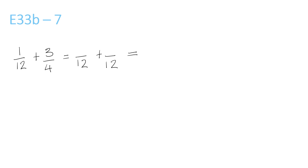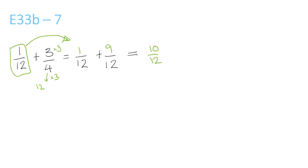12 and 4 both go into 12. 4 times 3 is 12, so we have to do 3 times 3 to get 9, and then we just bring the 1 over 12 over here. Now we do 1 plus 9 is 10 over 12, and the top and bottom can both be divided by 2, so we simplify it: 10 divided by 2 is 5, and 12 divided by 2 is 6.